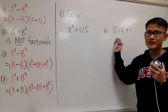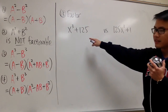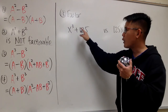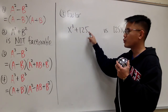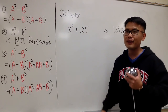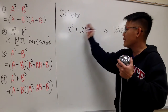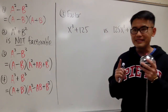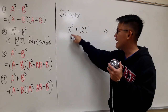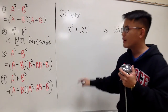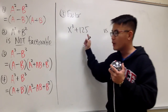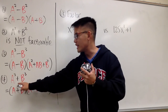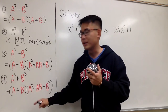Now we'll see how to factor these two, and we'll focus on the first one: x to the third power plus 125. Don't get too excited and see the plus sign and say that's not factorable. This right here is x to the third power, and we're actually talking about the fourth situation — the sum of two cubes.